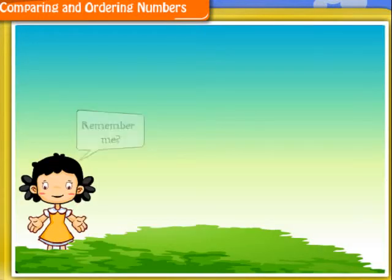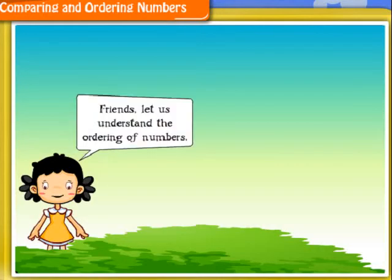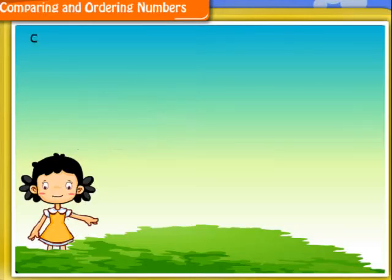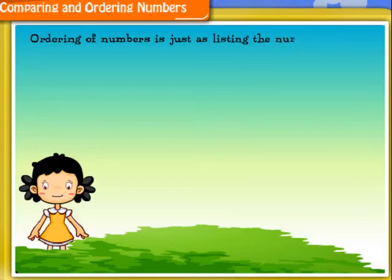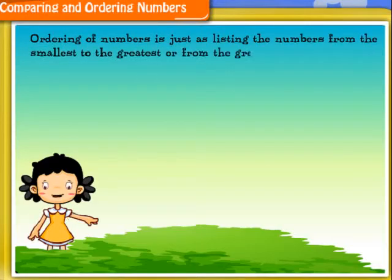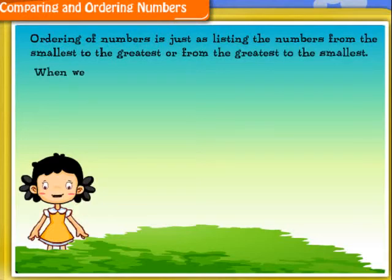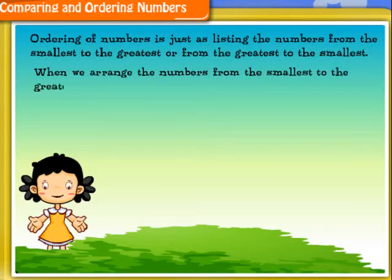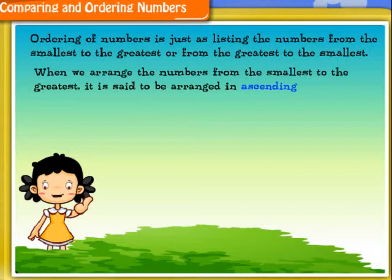I am Nisha. Remember me? Friends, let us understand the ordering of numbers. Ordering of numbers is listing the numbers from the smallest to the greatest or from the greatest to the smallest. When we arrange the numbers from the smallest to the greatest, it is said to be arranged in ascending order.